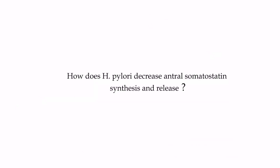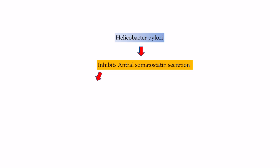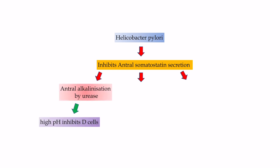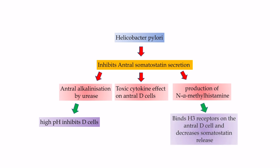How does H. pylori decrease antral somatostatin release? The mechanism of decreased antral somatostatin synthesis and release may be related to: 1) antral alkalinization due to Helicobacter urease, since acid in the antrum normally releases somatostatin; 2) toxic cytokine effect on antral D-cells; and 3) Helicobacter production of N-methylhistamine, an H3 receptor agonist which binds H3 receptors on antral D-cells and decreases somatostatin release.